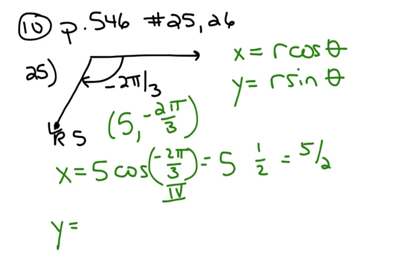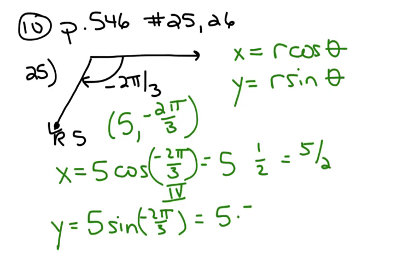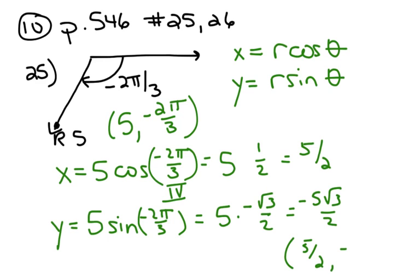y equals 5 times sine(−2pi/3). Sine is negative in that quadrant, so it's 5 times negative √3/2, which is negative 5√3/2. So the rectangular coordinates are (5/2, −5√3/2).